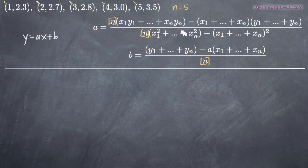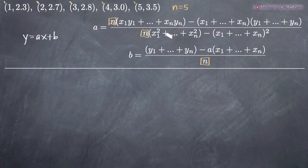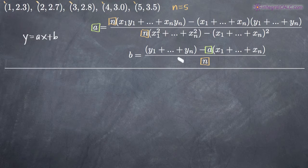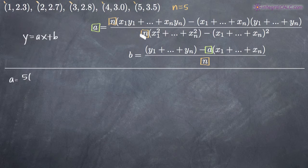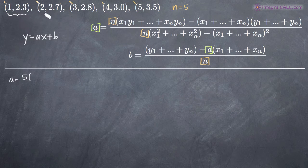If we know these formulas, the hardest part about this concept is memorizing them. But once we know them, this becomes a really easy problem — we're just plugging in values to find a and b. Notice that we have to find a first because a exists in the formula for b. So we'll go ahead and find a first.